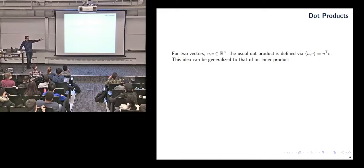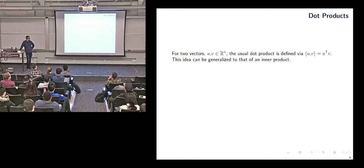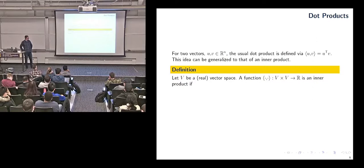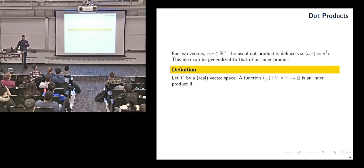If we have two vectors in R^n, we can define the dot product in the usual sense by taking the transpose and multiplying. But we can be a little bit more general than just doing a transpose, and when we make it more general, we call it an inner product. I'll use inner product and dot product interchangeably throughout this lecture — it's just a way to multiply two vectors together.